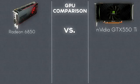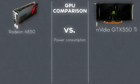Today we will compare the Radeon 6850 and the NVIDIA GTX 550 Ti across a number of categories. Let's start with power consumption. The power consumption of the GTX 550 Ti is 116 watts, and the 6850 is 127 watts.